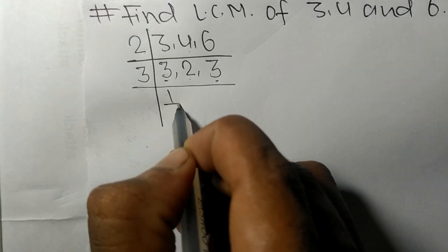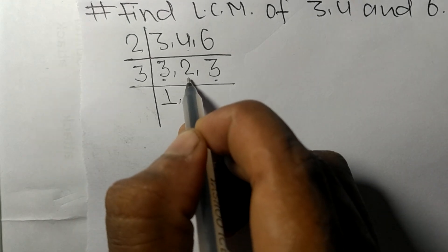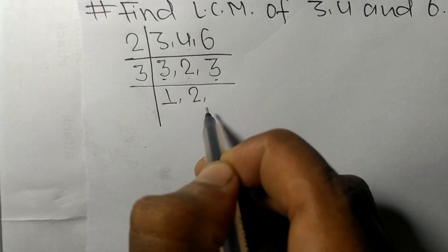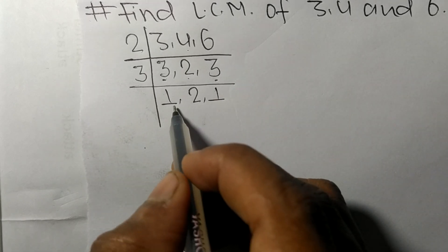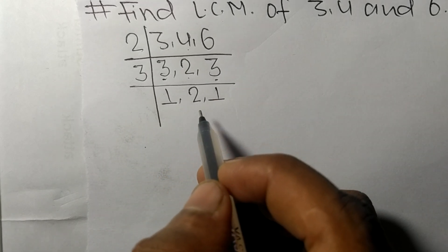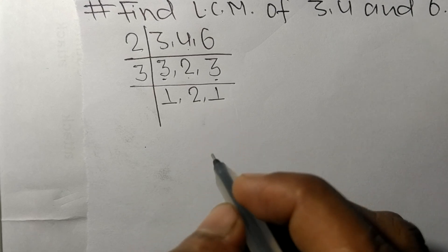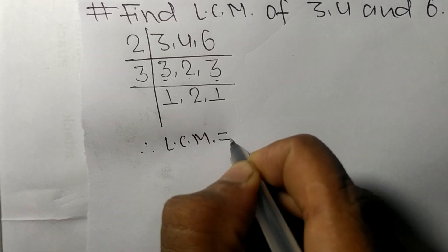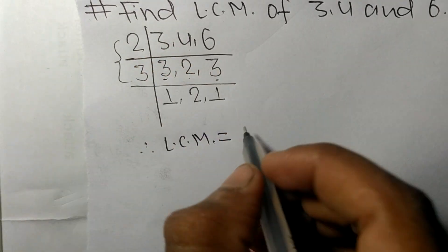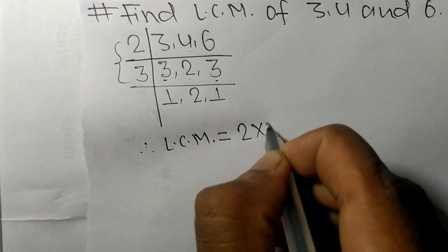3 times 1 means 3, 2 not divisible so as it is, 3 times 1 means 3. So now these numbers are not exactly divisible by the same number. Therefore, LCM is equal to, from this side it is 2 and